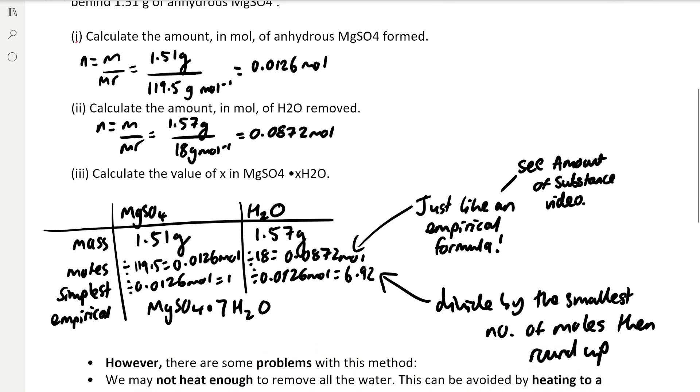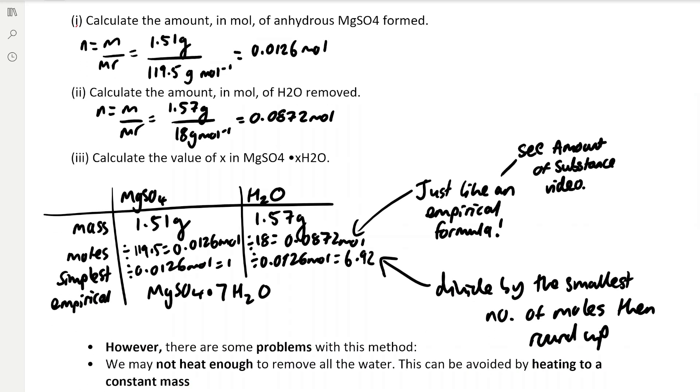To find the value of X, which is usually what they ask in exams, we use essentially the same method as when we're trying to find the empirical formula. We set out our table: mass, moles, simplest, and empirical. You can see more about this method in the amount of substance video on my channel.